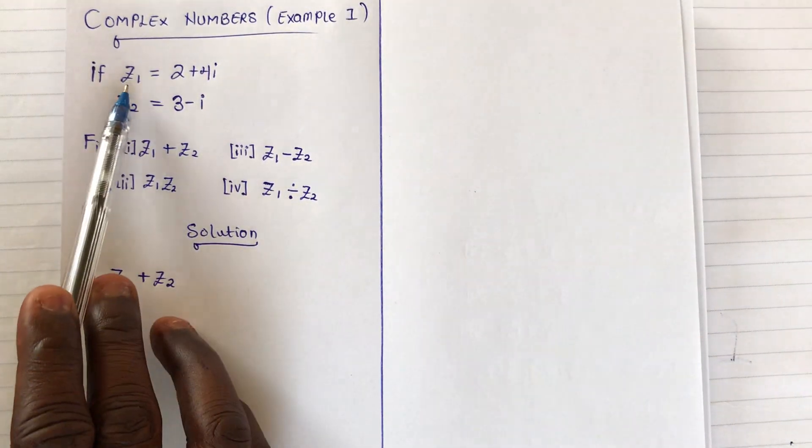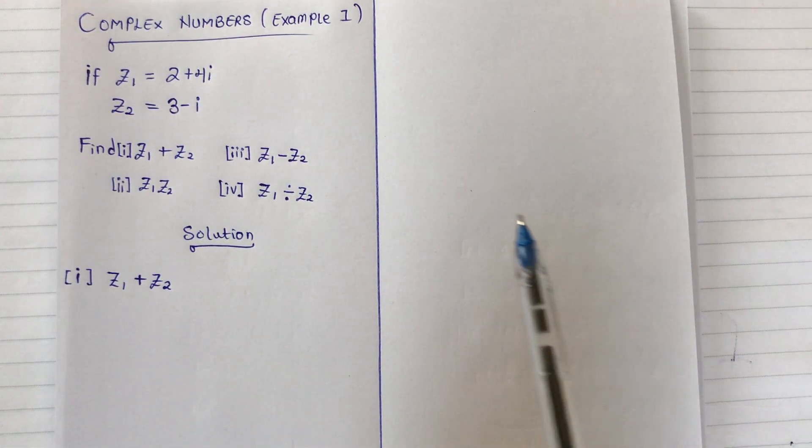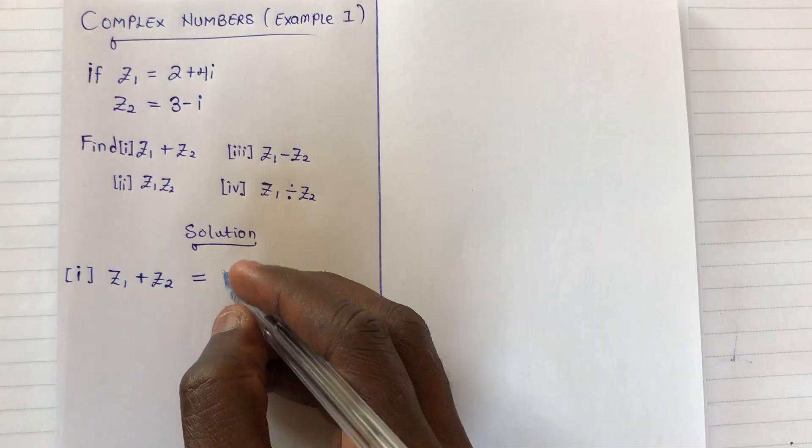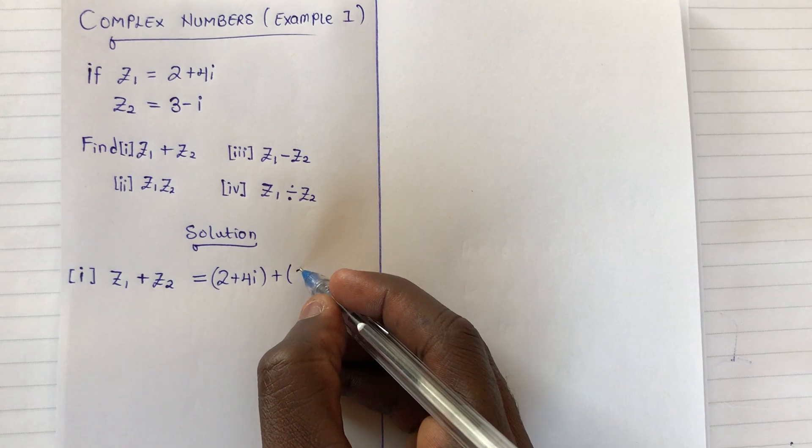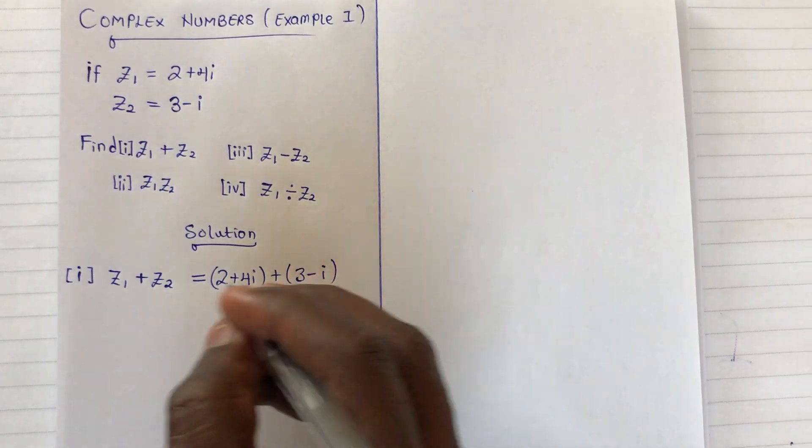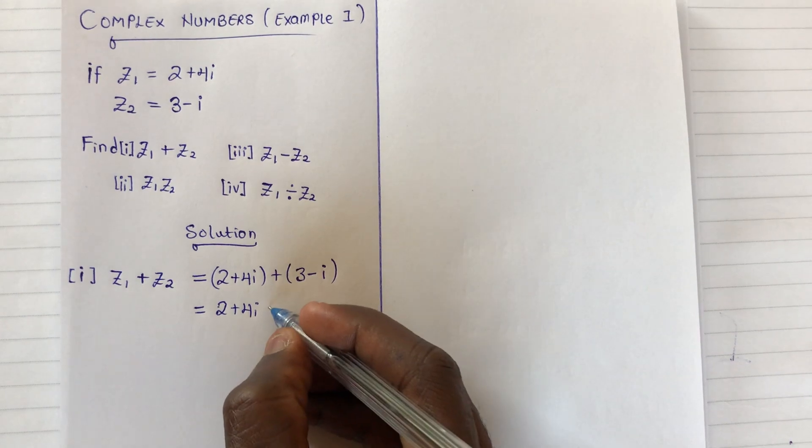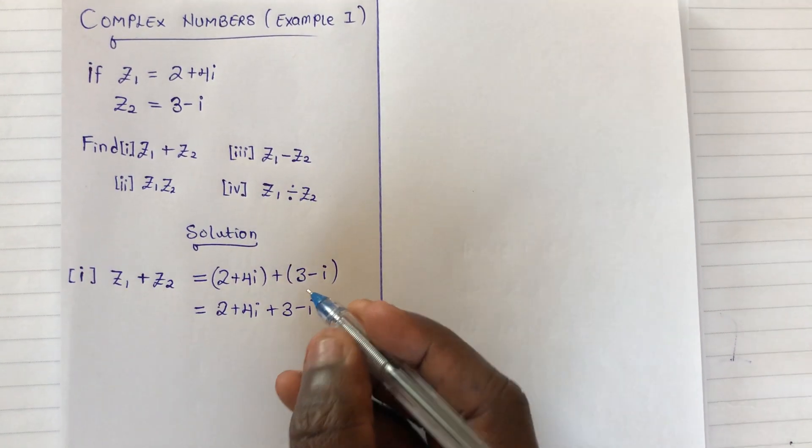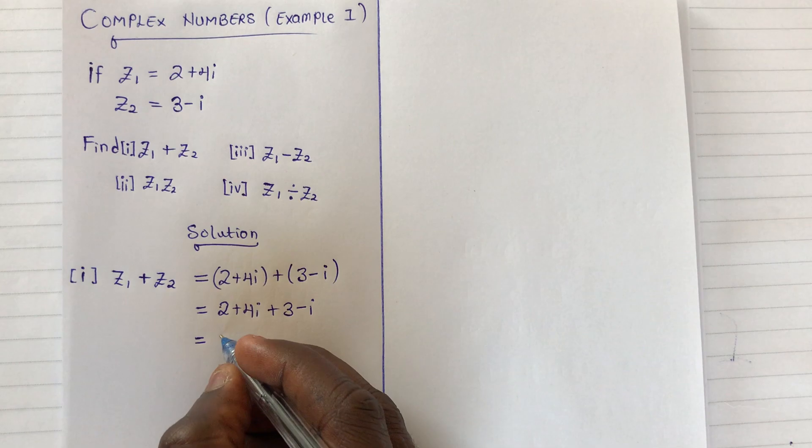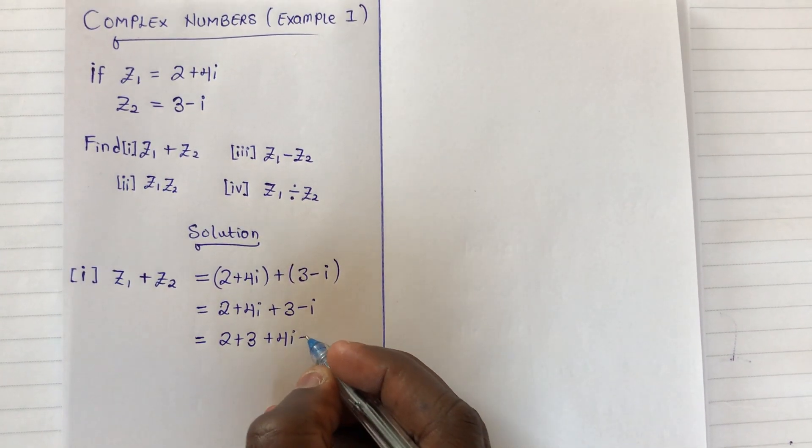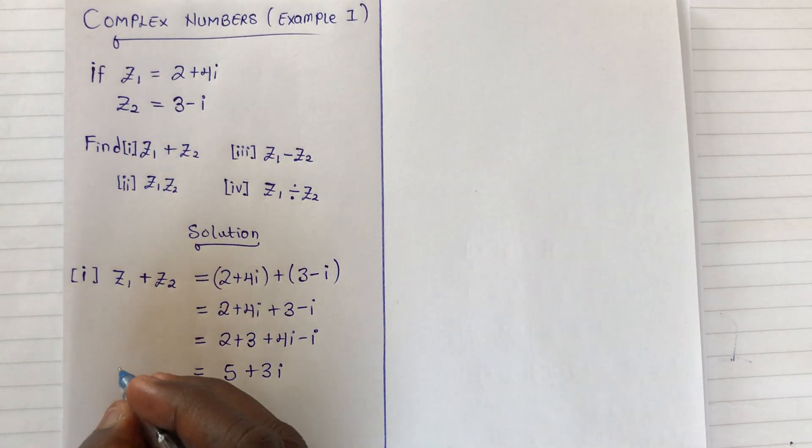Here we have z1 = 2 + 4i and z2 = 3 - i, and we are told to find z1 + z2. The sum of these two is (2 + 4i) + (3 - i). We add all real terms: 2 + 3, and all imaginary terms: 4i - i. This gives us 5 + 3i, so z1 + z2 = 5 + 3i.